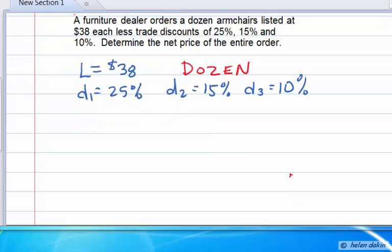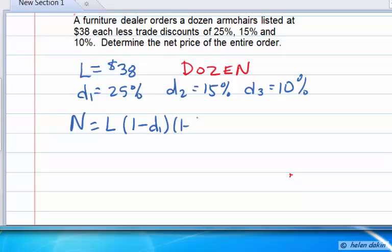From our trade discount relationship, we know that the net price, N, is equal to the list price times 1 minus D1, times 1 minus D2, times 1 minus D3.